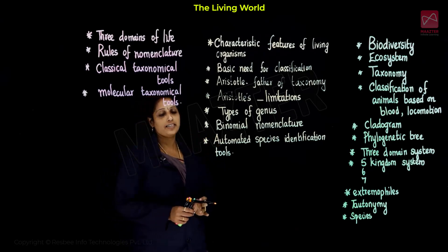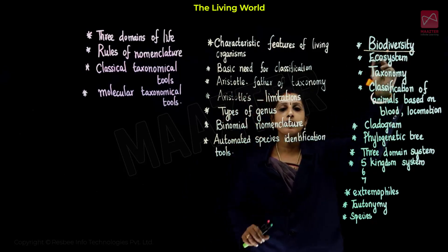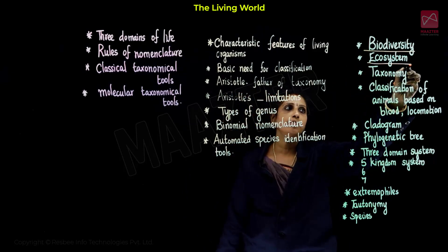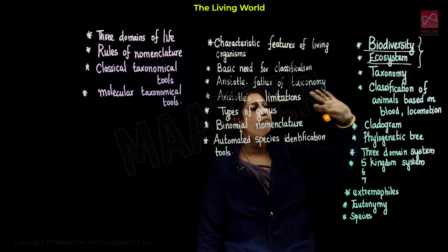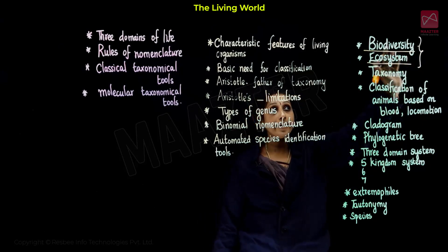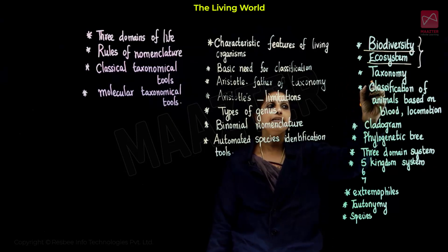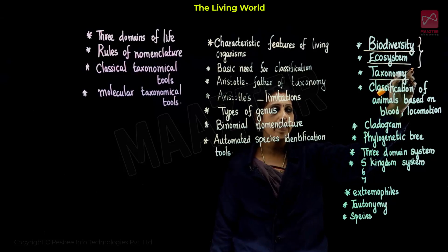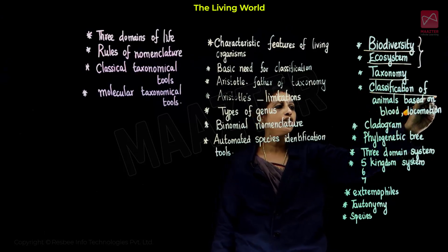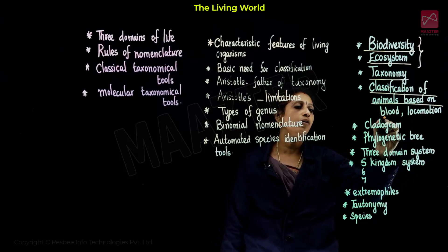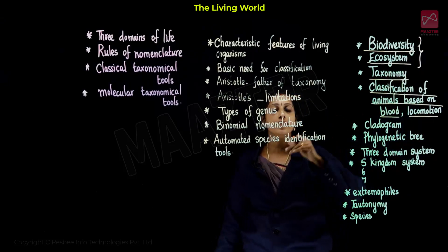Two more questions. The 1st section is the bio-diversity ecosystem. The 2nd section is the same paragraph. This is the 2nd lesson in this video — it is quite important. A very important question is to tell us two exceptions. The 2nd lesson is the same — the 1st of taxonomy. What is the meaning of taxonomy? Then, classification of animals based on blood and locomotion. This is the next section on classification.